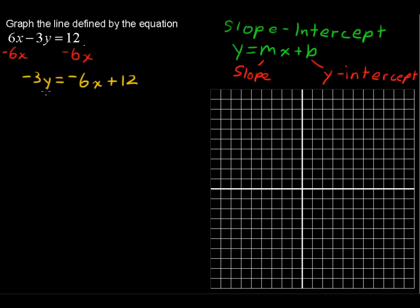And then we want to get y by itself, so let's divide everything by negative 3, that coefficient of y. Dividing everything by negative 3 gives us y equals positive 2x minus 4.